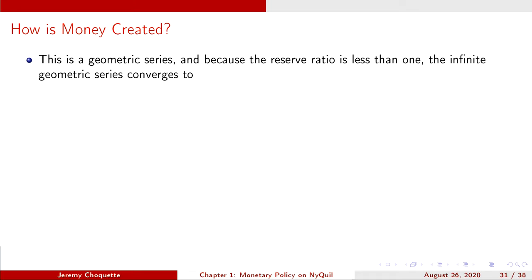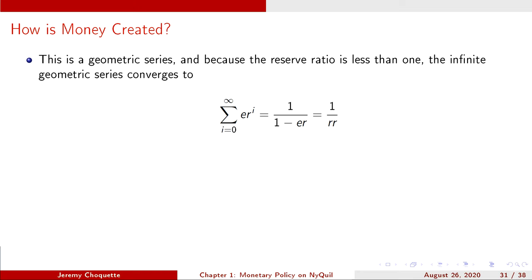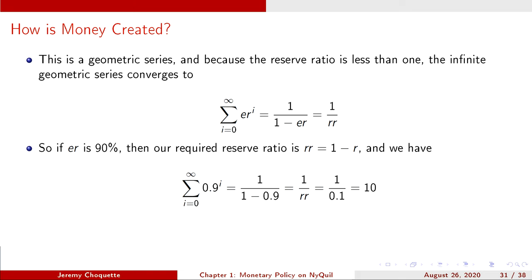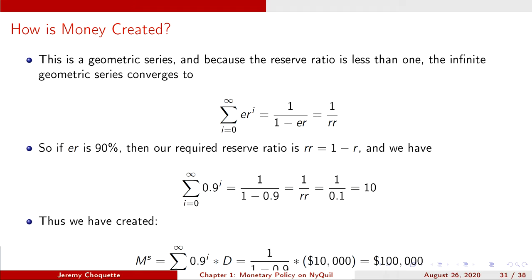If the reserve requirement is 10%, we can lend out 90%, meaning er equals 0.9. If the initial deposit d equals $10,000, we can express the infinite sum multiplied by d. This is a geometric series. Since er is less than one, the infinite geometric series converges to a finite number: 1 over (1 minus er), or 1 over rr. So if er is 90%, rr equals 1 minus 0.9 equals 0.1. We get 1 over 0.1, which equals 10. Multiply that by the $10,000 deposit, and we have created $100,000.